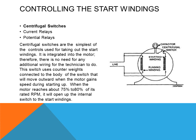A centrifugal switch is the simplest type — it uses a mechanical action with counterweights that use centrifugal force to move linkages inside the motor to open the start windings when the motor reaches full speed. As soon as the motor slows down or stops, the switch will close again.